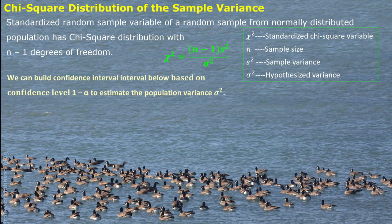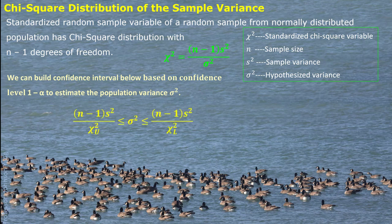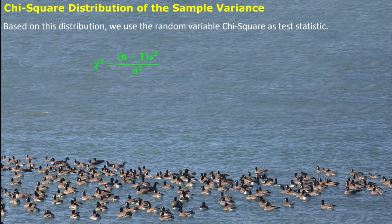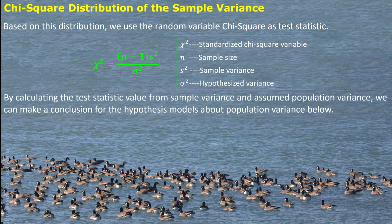With this sampling distribution, we can build a confidence interval based on confidence level 1 minus alpha to estimate the population variance sigma-squared. Here we have chi-L-square and chi-U-square, representing the lower and upper chi-square critical values. Similarly, the chi-square statistical function in Excel can easily be applied to find these critical values. This chi-square can be used as a test statistic to make a conclusion for the hypothesis about population variance — either two-sided or one-sided.